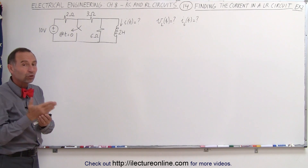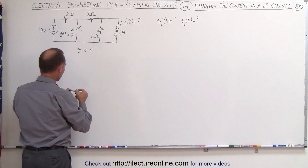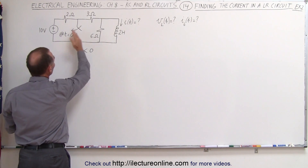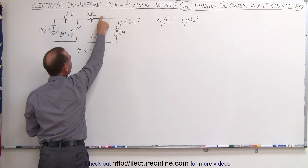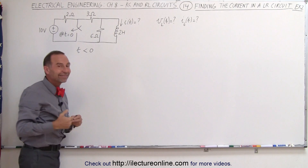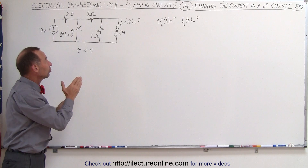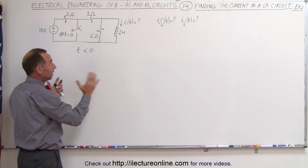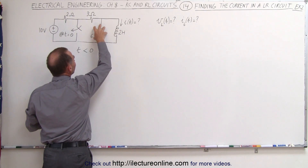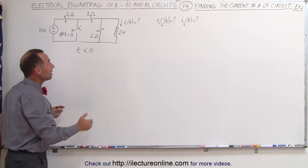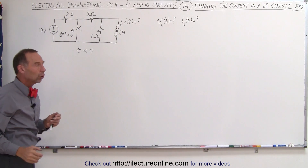So what's happening before the switch closes? What happens when T is less than 0? When T is less than 0, the switch is open, all the current goes through here, through the 3 ohm resistor, to the branch point. Since the inductor will be in a steady state situation, that means the inductor no longer opposes the current, because it only opposes a change in the current. The current is not changing, so all the current will be going through the inductor and none of it will be going through the 6 ohm resistor, which means that the inductor will act like a short and the 6 ohm resistor will act like an open.